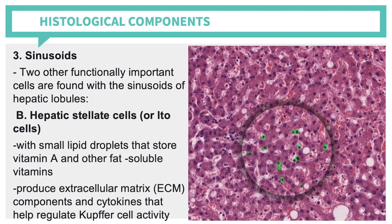The other cells are hepatic stellate cells or Ito cells — small cells with lipid droplets that store vitamin A and other fat-soluble vitamins. This is high-yield information for examinations. Ito cells also produce extracellular matrix components and cytokines that help regulate Kupffer cell activity.